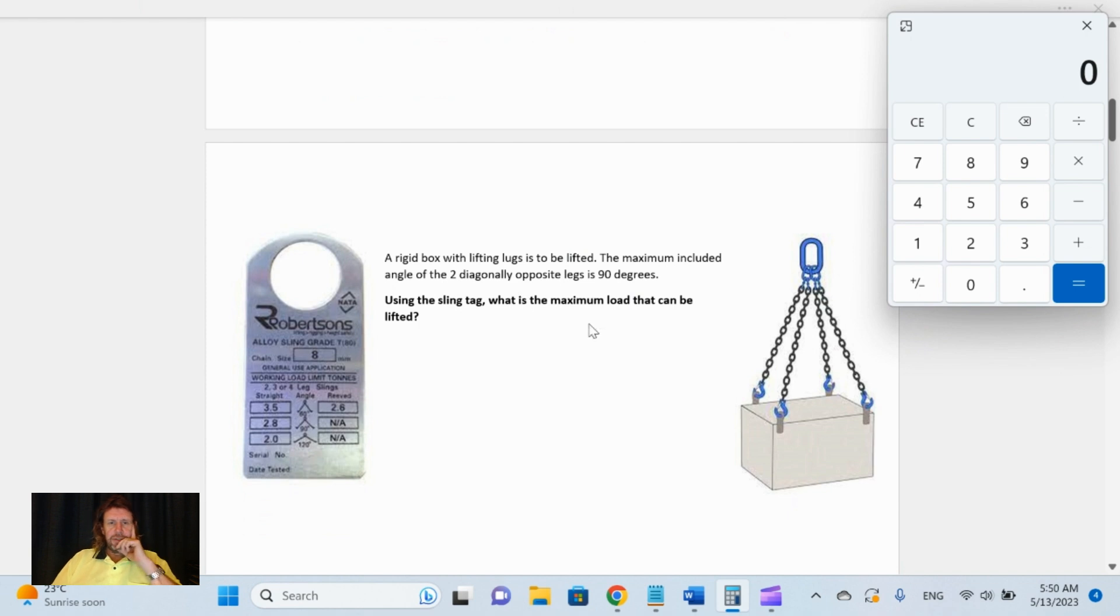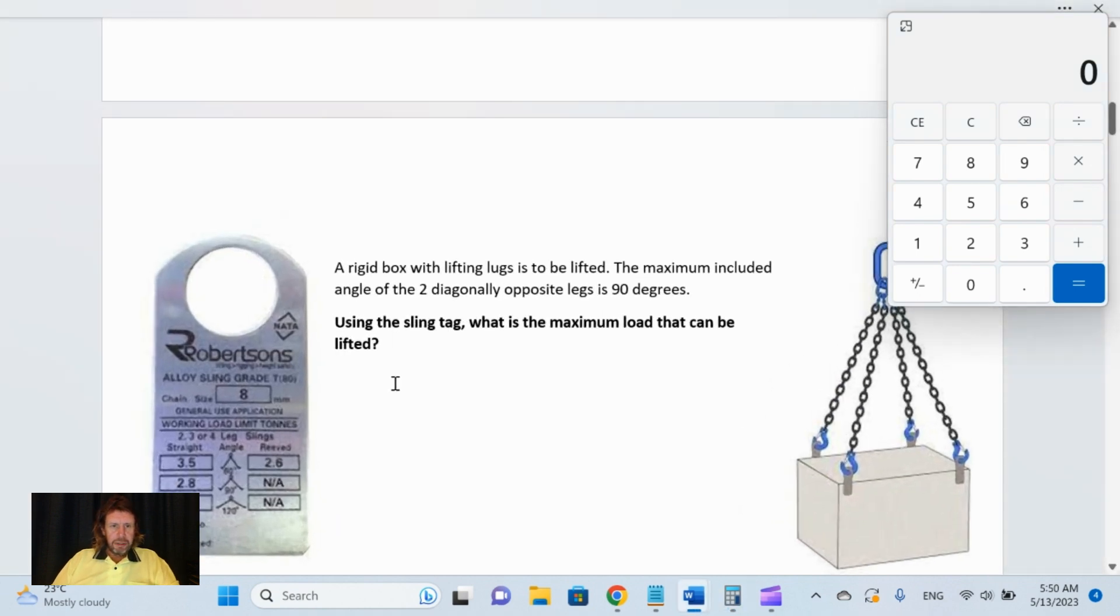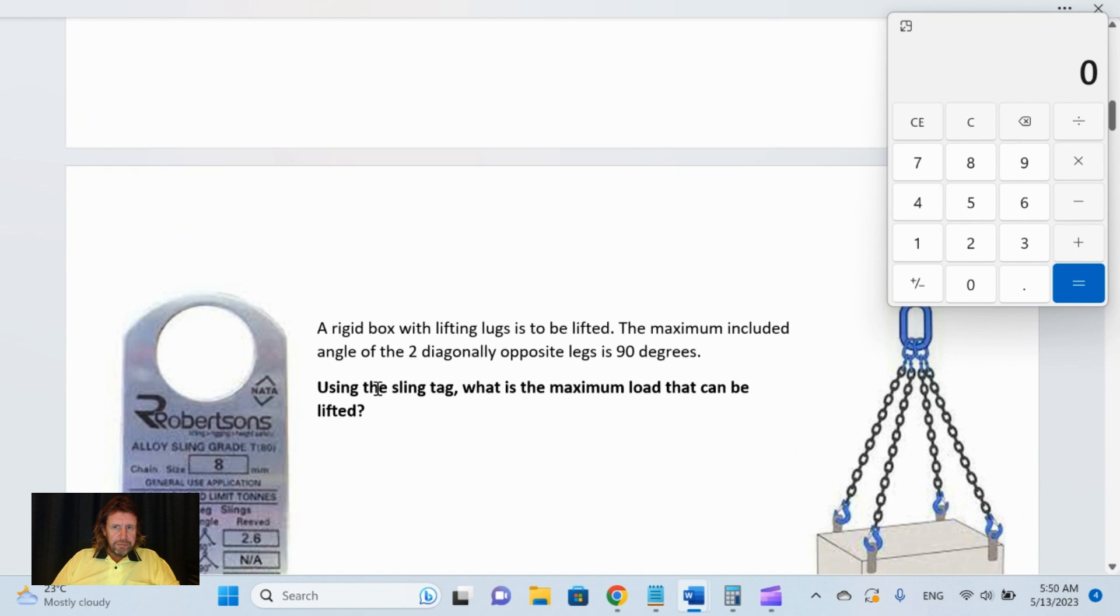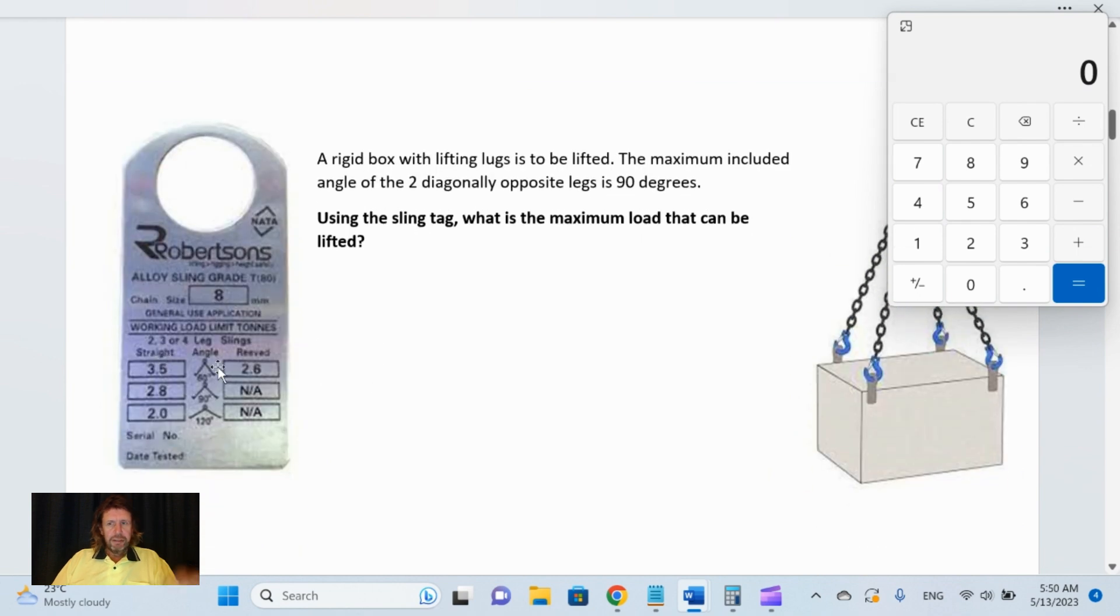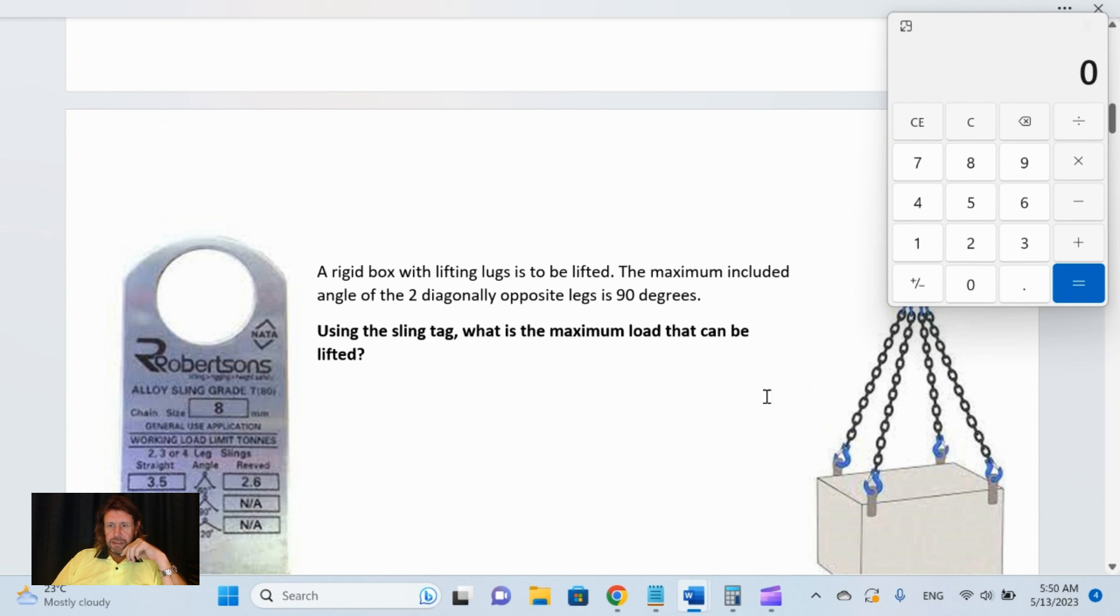Next one: a rigid box is to be lifted with lifting lugs, so it's a direct load. The maximum included angle of the two diagonally opposite legs is 90 degrees. Using the sling tag, what is the maximum load that can be lifted? If we go down here we can see that 90 degrees is there in the middle one, and it is a straight lift, it's not reeved, so it's directly loaded.